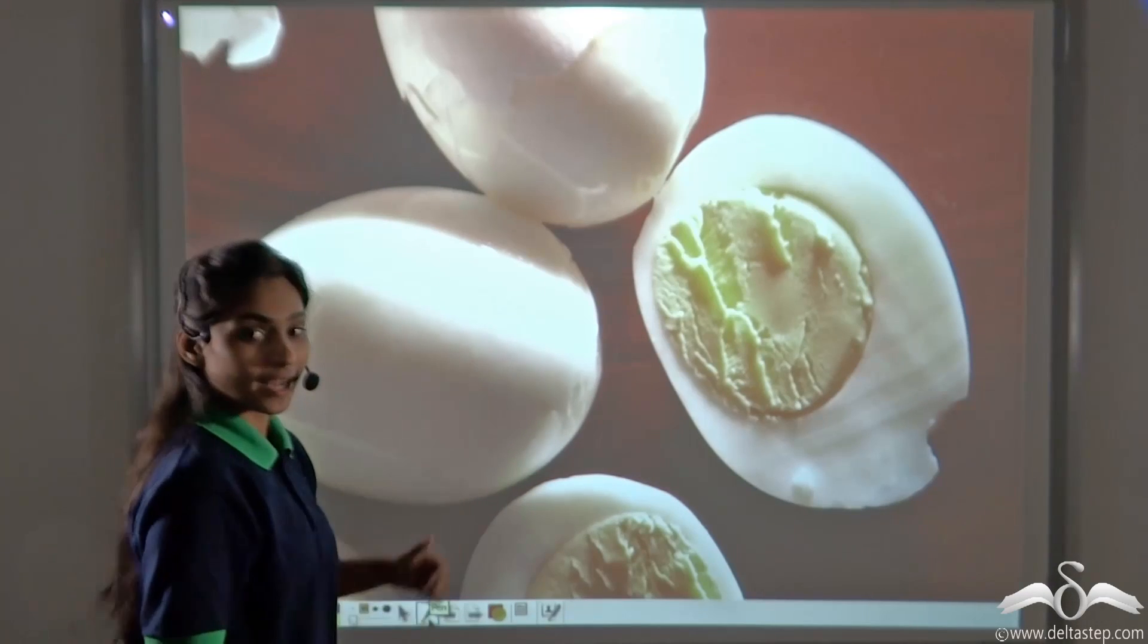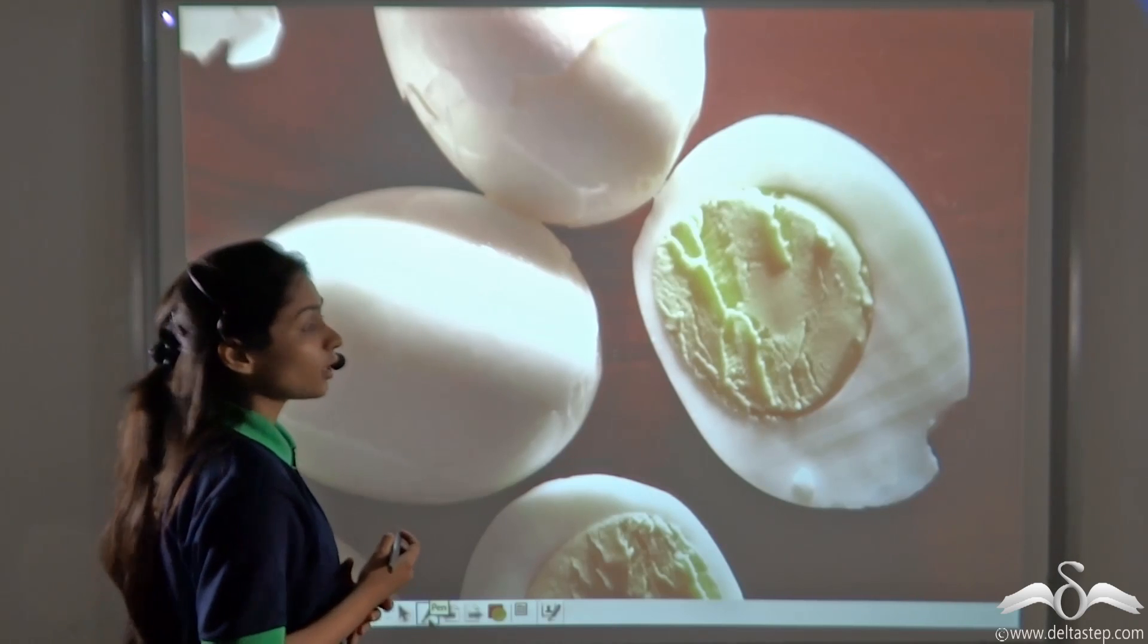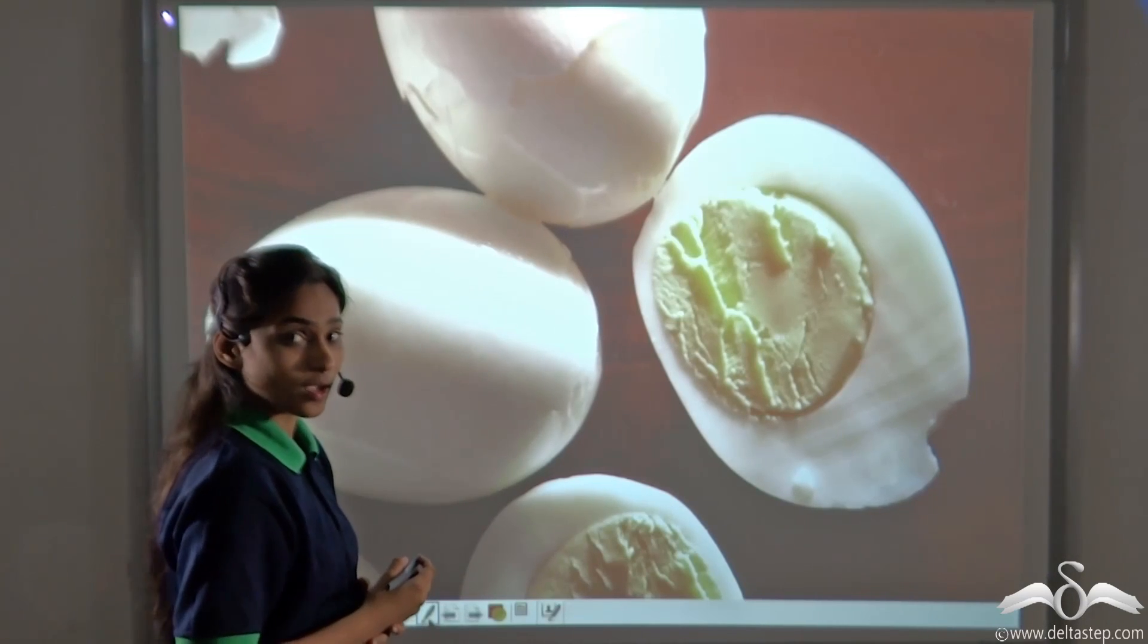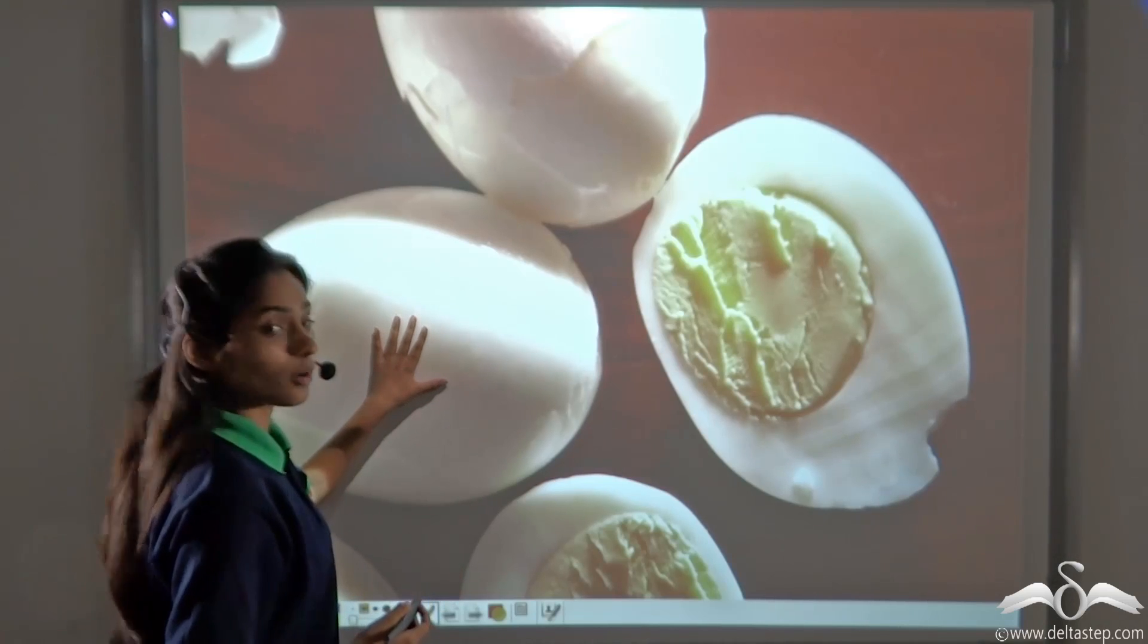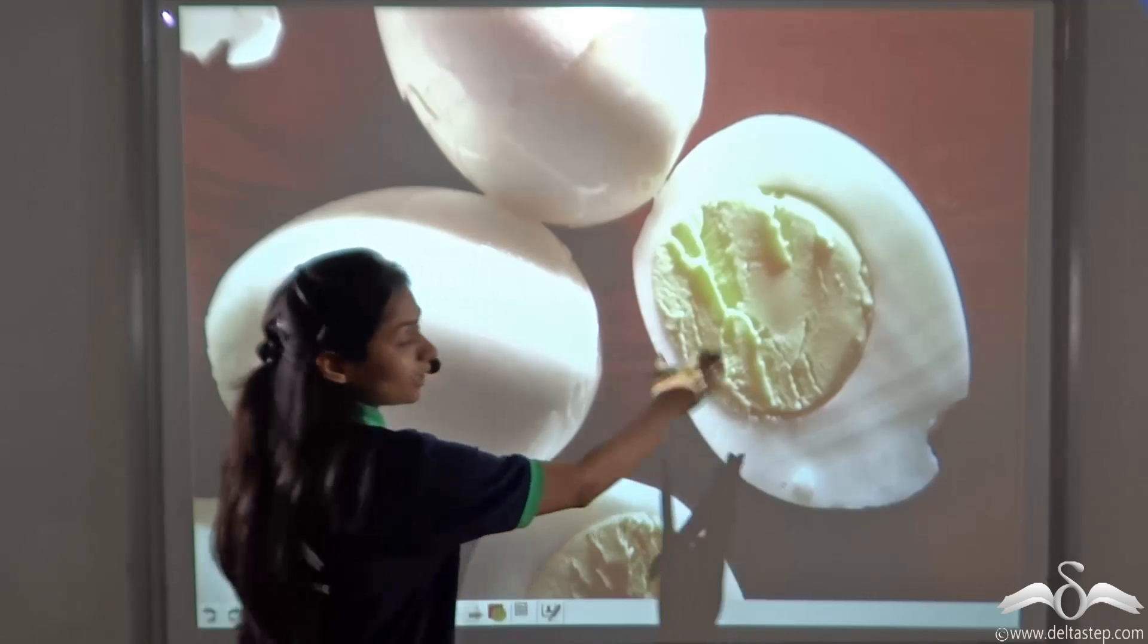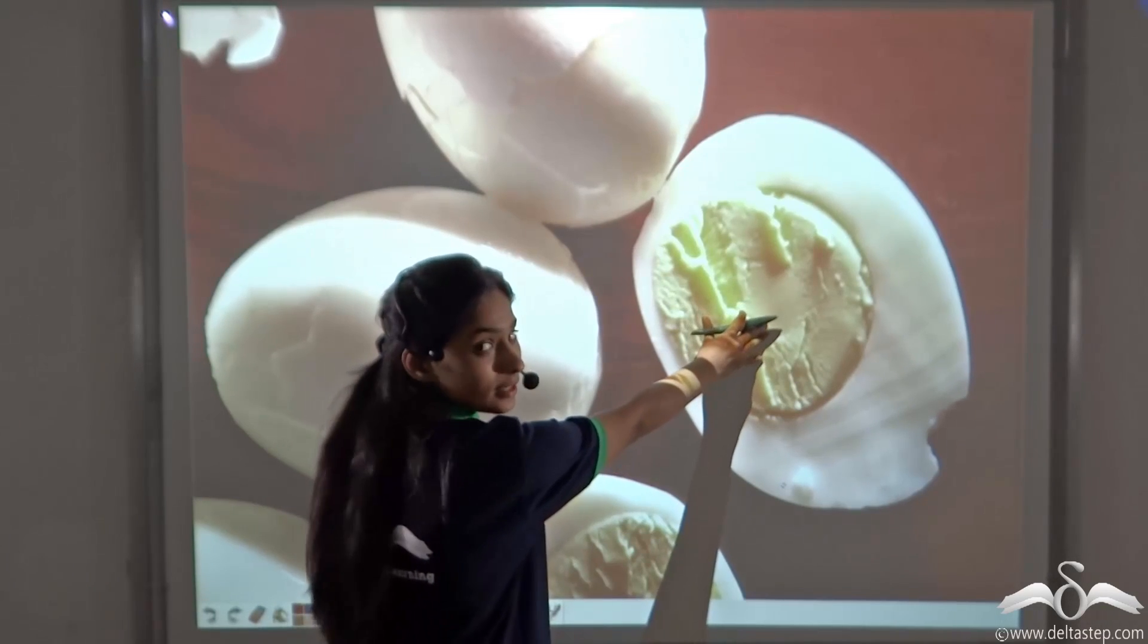This is a picture of a boiled egg which is quite a common breakfast in our homes. Now have you ever observed how your mom prepares this breakfast? First, she peels off the outer layer of the egg, then comes the white portion and then if you cut the white portion, you will be able to see the yellow part behind it, that is the yolk.